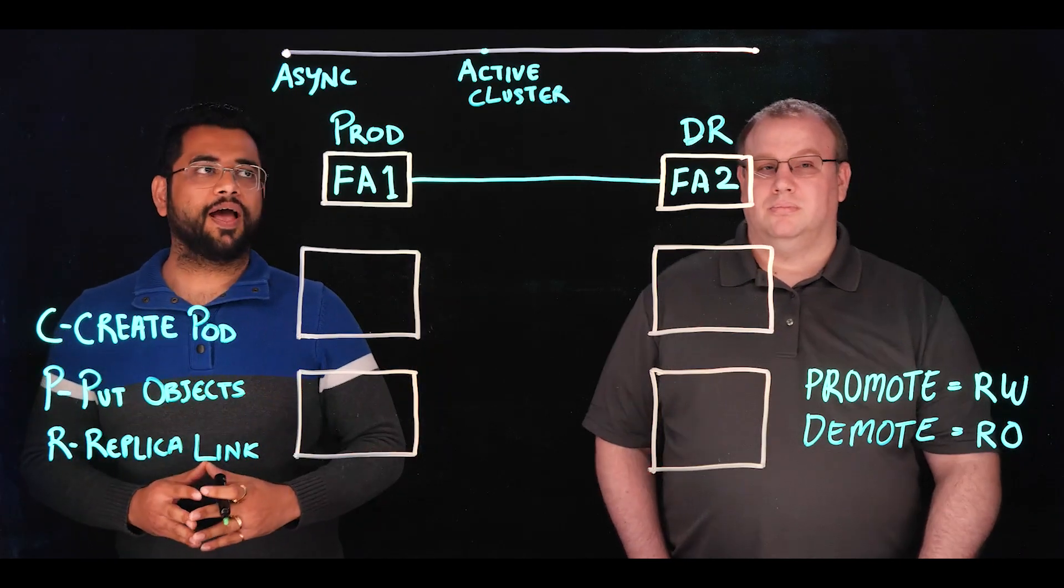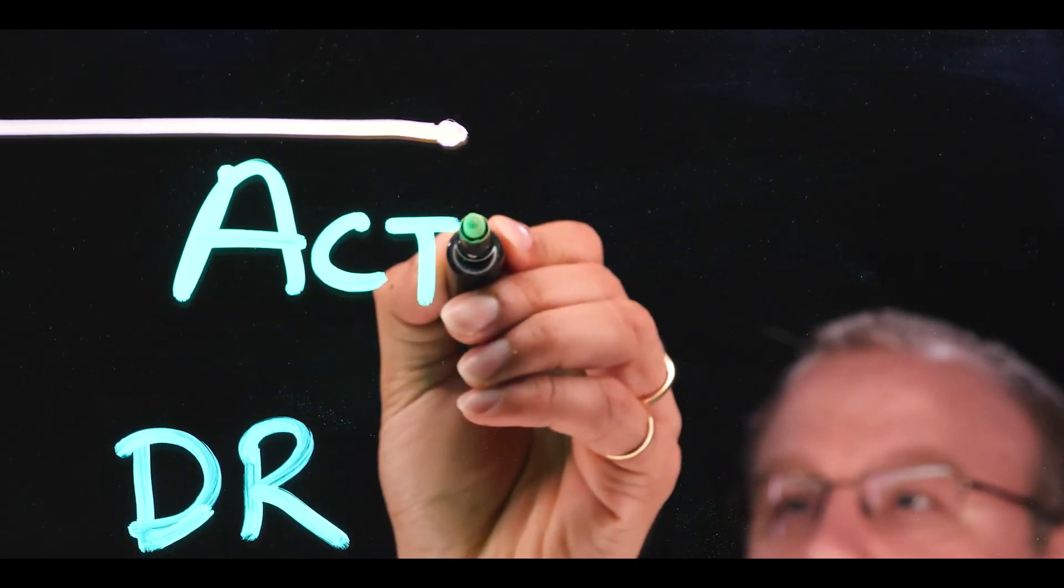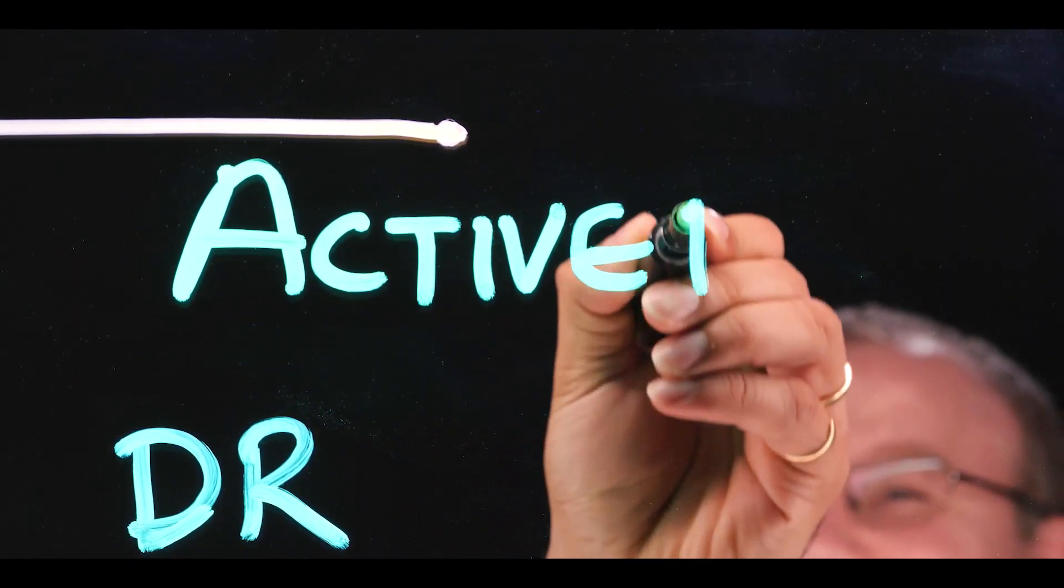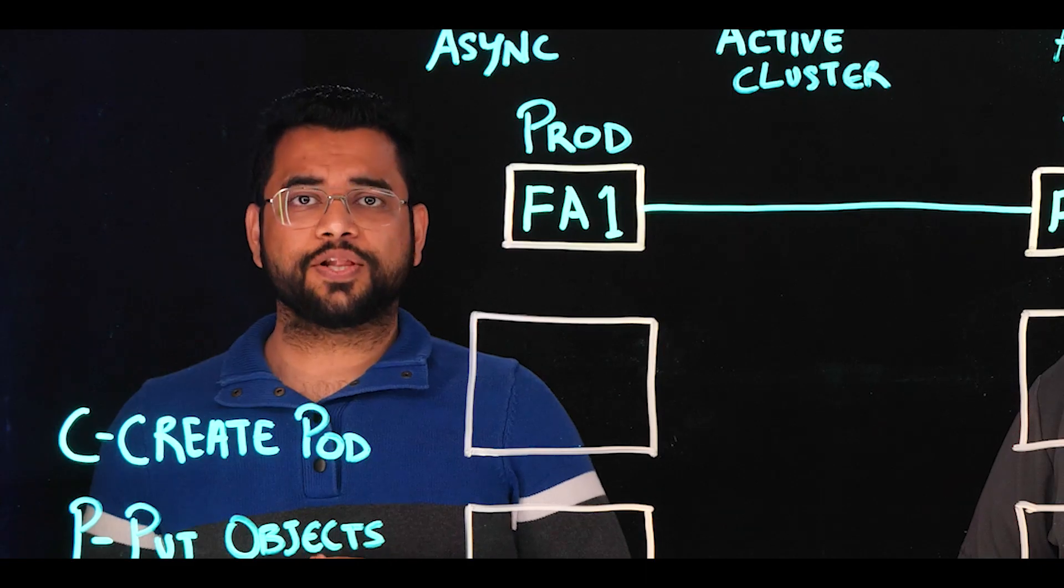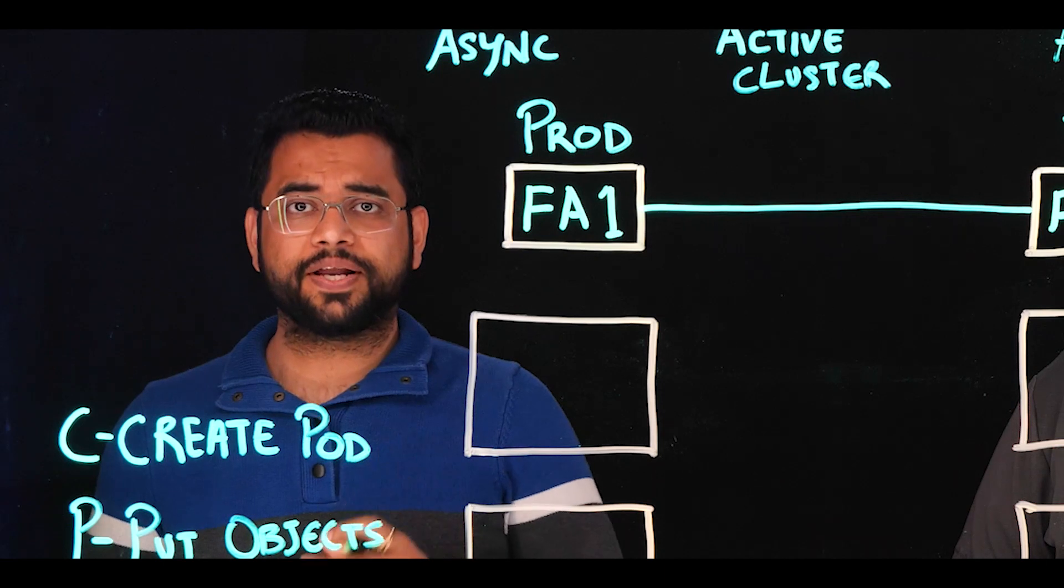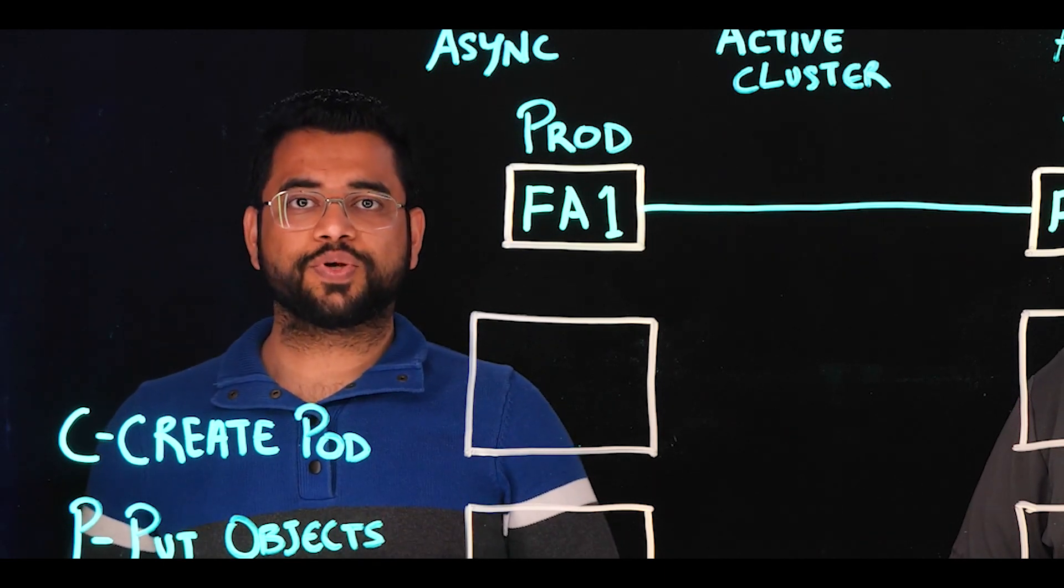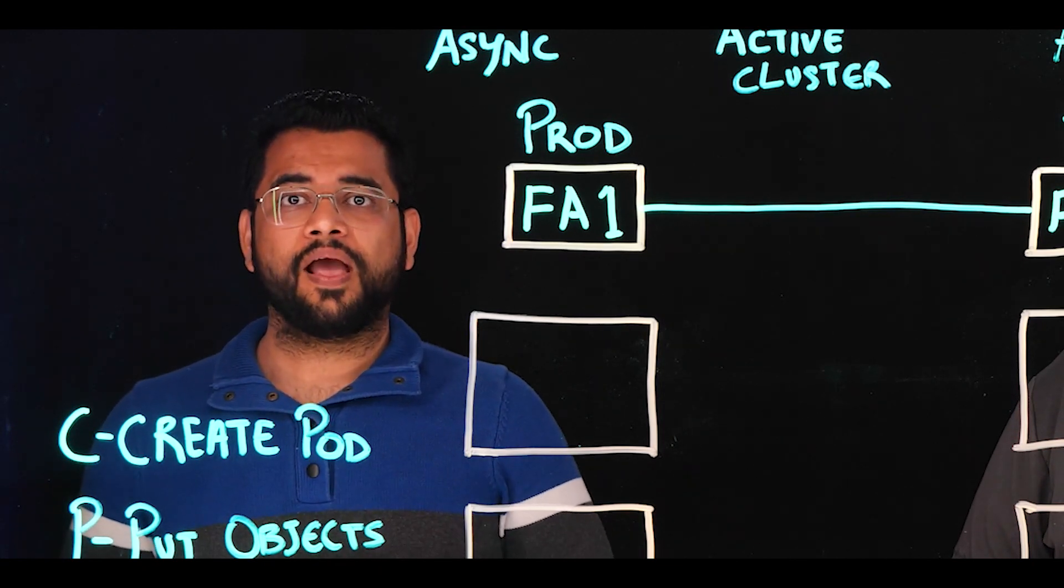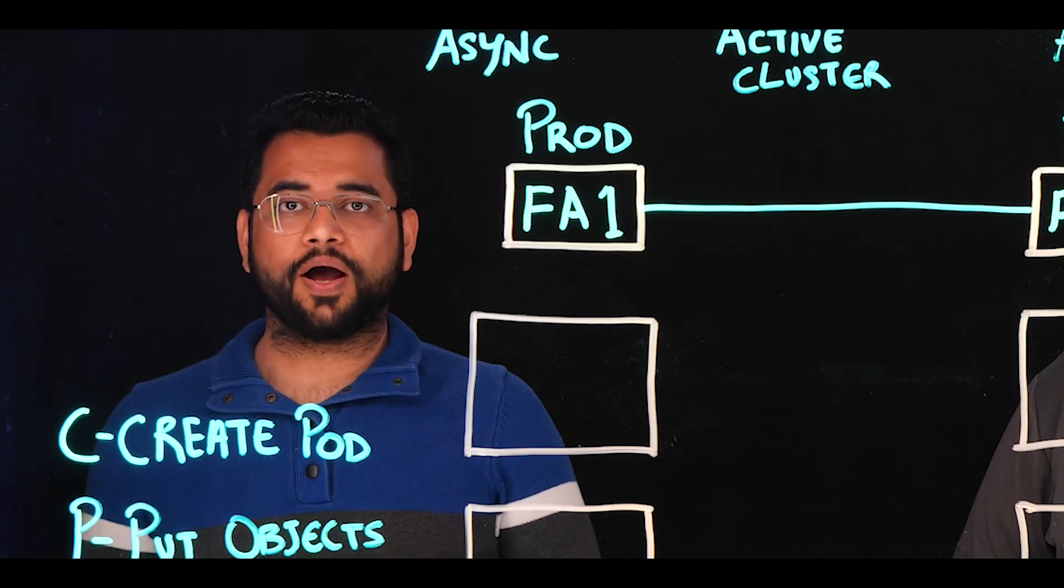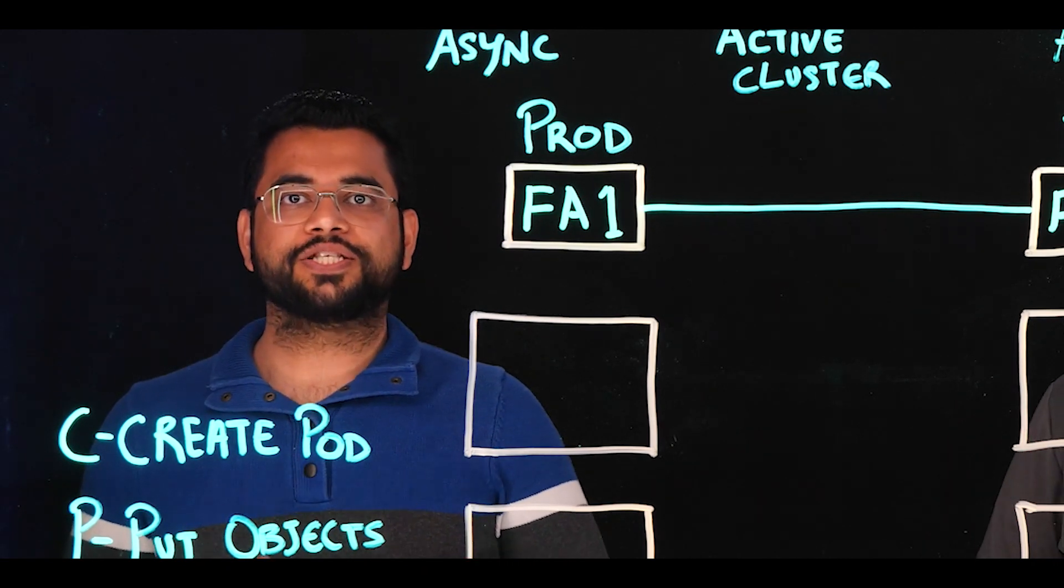My team took that back to Pure Engineering and we came back with Active DR. Active DR is a continuous replication solution that provides minimal data loss. It is a non-synchronous solution, so it does not have write latency and can work across any distance. And we built it from ground up to make failover and failback very simple in just two commands.